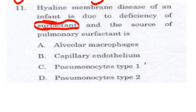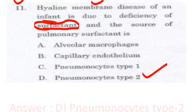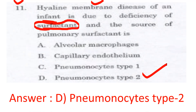The answer is D option — pneumonocytes type 2. Pneumonocytes type 2 is the source of pulmonary surfactant. So the answer is D: pneumonocytes type 2.